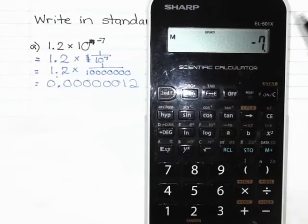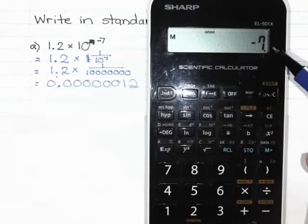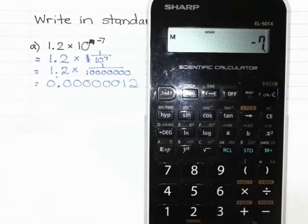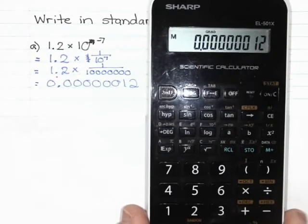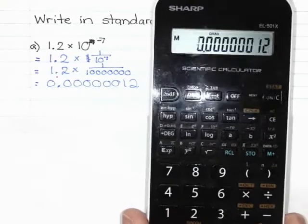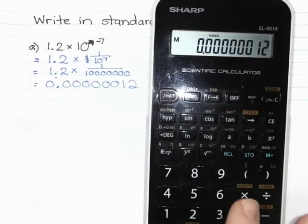So for me on my calculator, I have to do 7 and then hit my negative button. If you can see what you type in, like if you actually still see 10 to the power of, you can probably hit your negative button first. And that gives me 0.00000012.